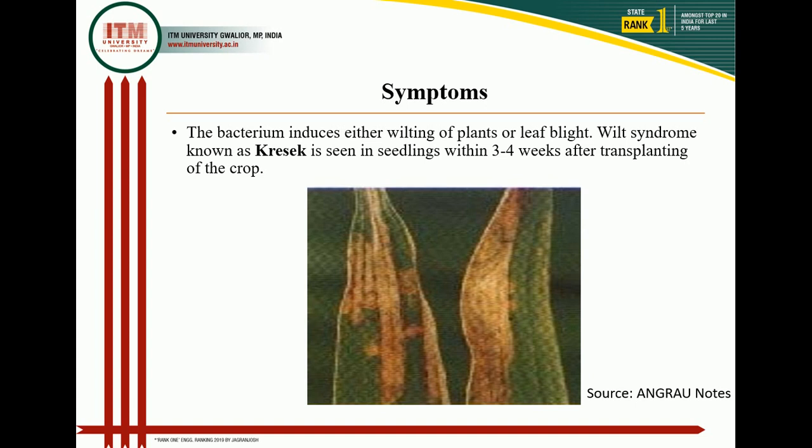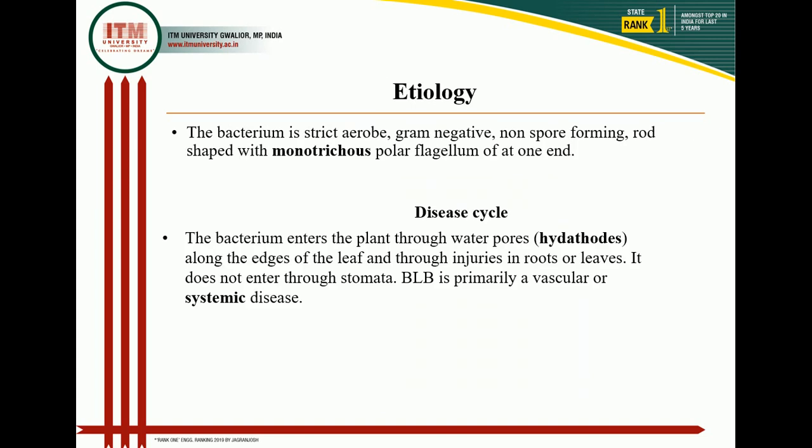Etiology: the bacteria is a strict aerobic, gram-negative, non-spore-forming, rod-shaped organism with monotrichous flagella at one end. The bacterial cells are encapsulated and joined to form an aggregated mass. Colonies are circular, convex with entire margin, white to straw yellow, and opaque in color. The bacteria has many strains differing in ability to infect rice plants; strains in tropical countries are usually more virulent than those in temperate areas like Japan.